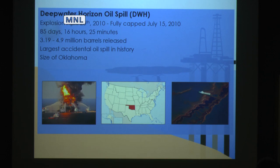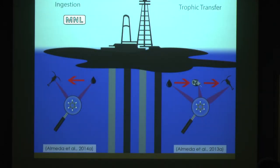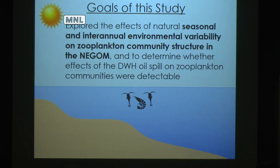It was the largest accidental spill in history, and the surface expression at one point was the size of Oklahoma. We also know through isotopic studies that oil from this spill made its way into the planktonic food web, likely through direct ingestion — animals eating the oil directly — or through trophic transfer via things in the microbial loop such as Noctiluca eating oil, which zooplankton in turn consumed. The goal of my study was to explore the effects of natural seasonal and inter-annual environmental variability on zooplankton community structure in the Northeast Gulf of Mexico, and to determine if we can identify the effects of the Deepwater Horizon oil spill by first establishing a baseline and comparing it to the time after the spill.